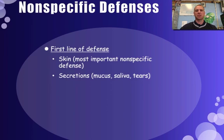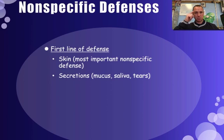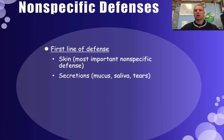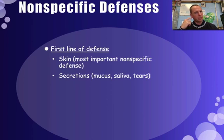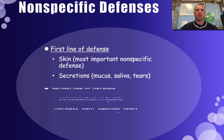Also part of the first line of defense are your secretions, like mucus, saliva, and tears. Tears constantly coat the eyes, preventing most things from getting in. Mucus in the nose and down the throat — and saliva — capture particles that may enter. There are also hairs in the ears and nose that help filter things out.